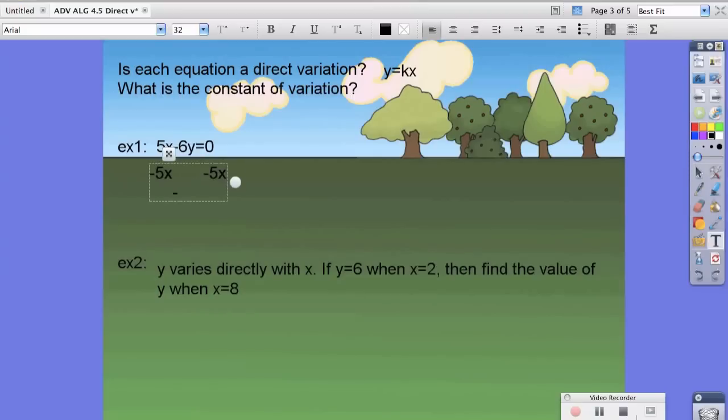We're going to be left with negative 6y equals negative 5x divided by negative 6. And we're left with y equals 5 sixths x.